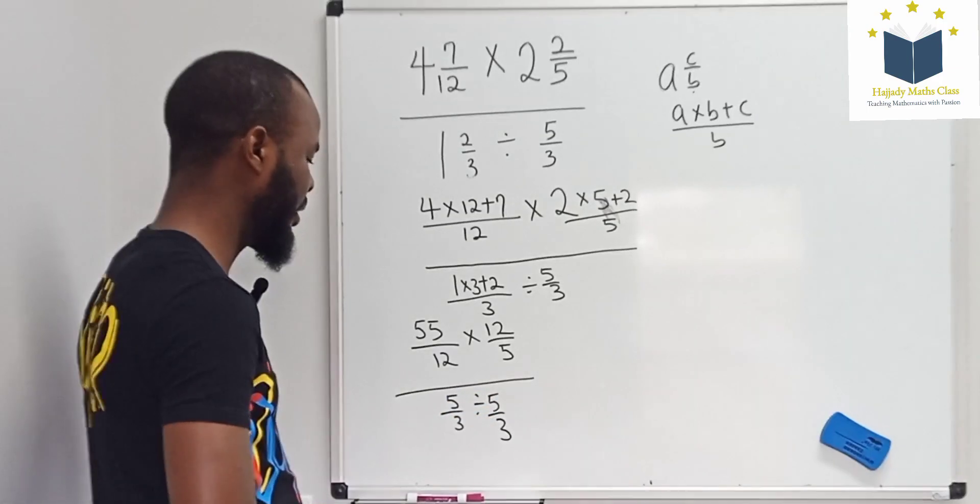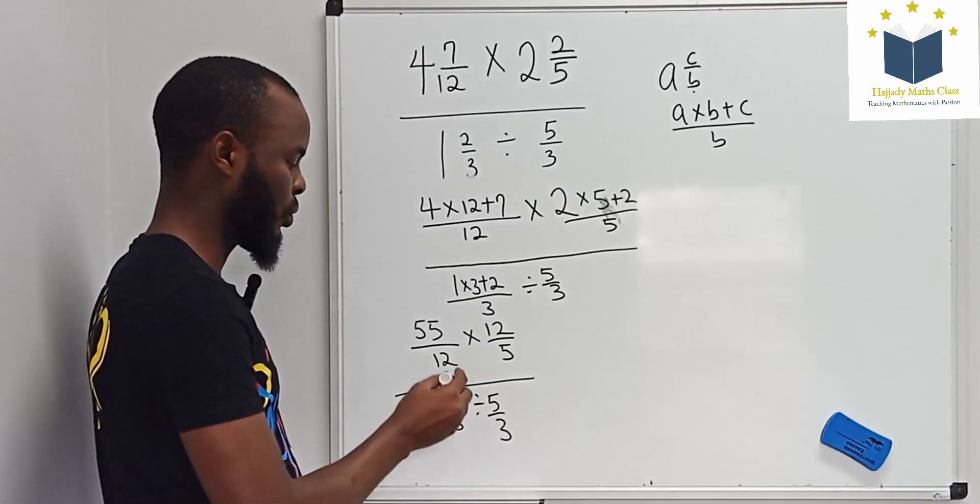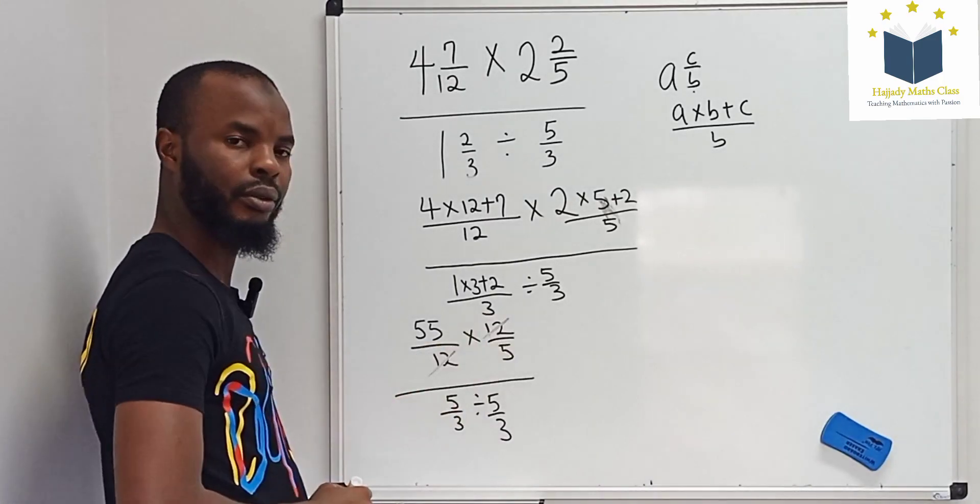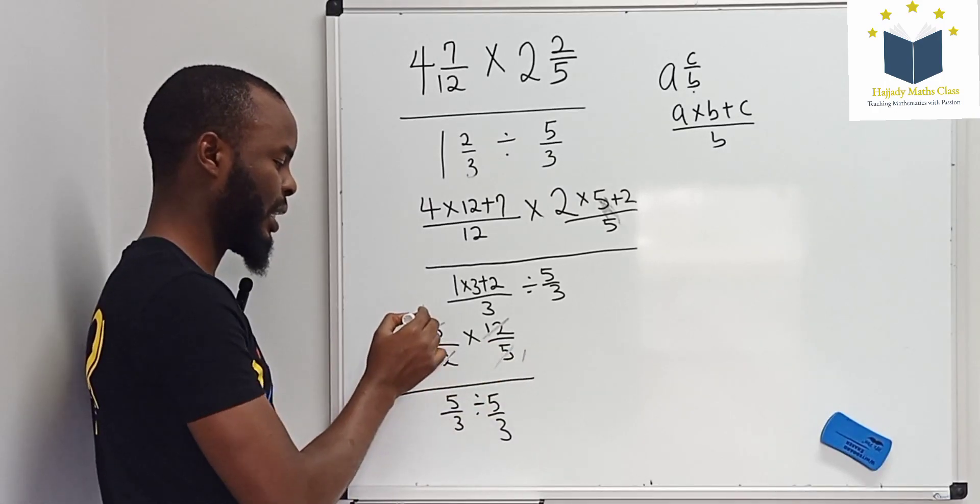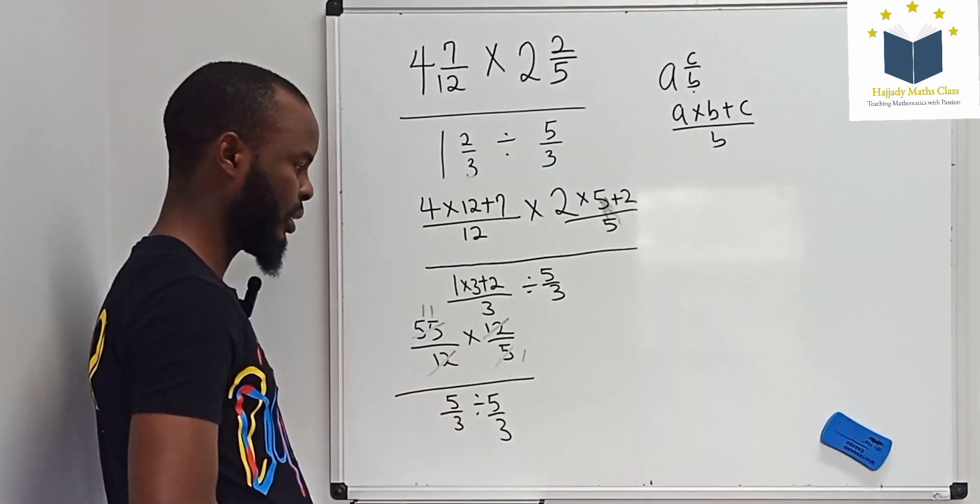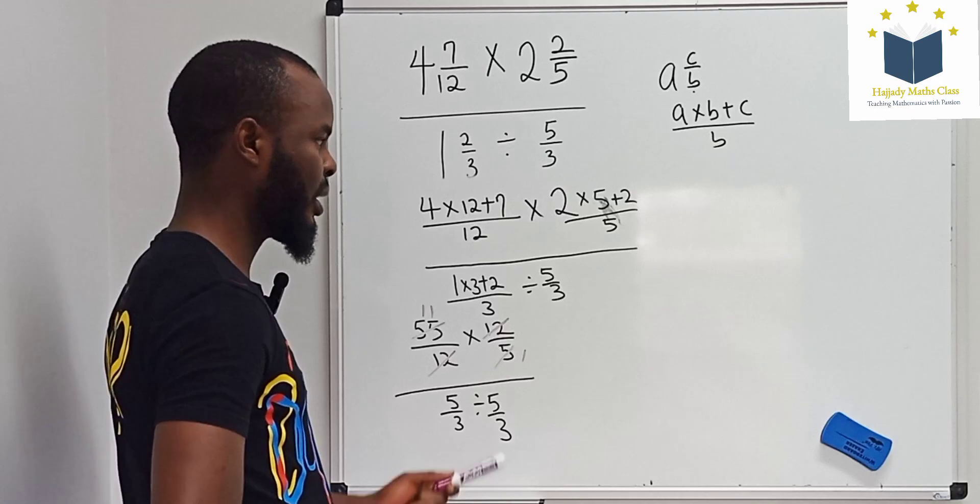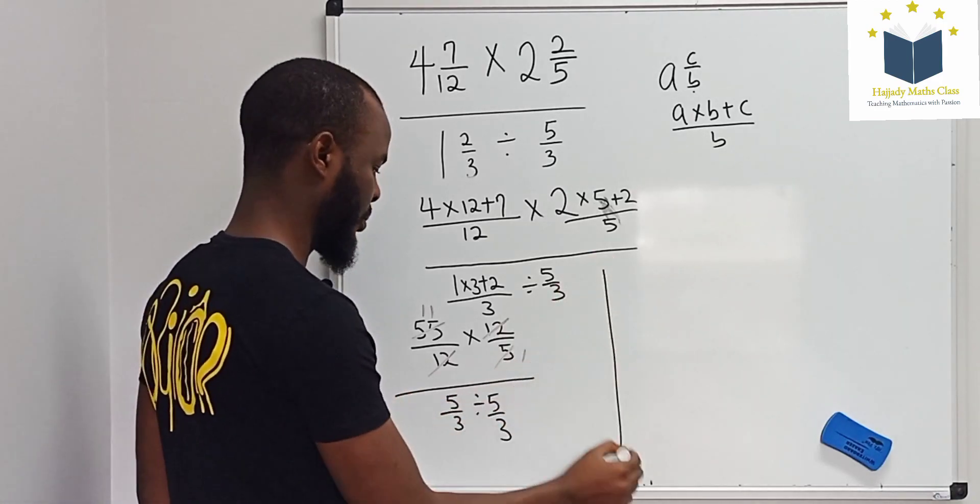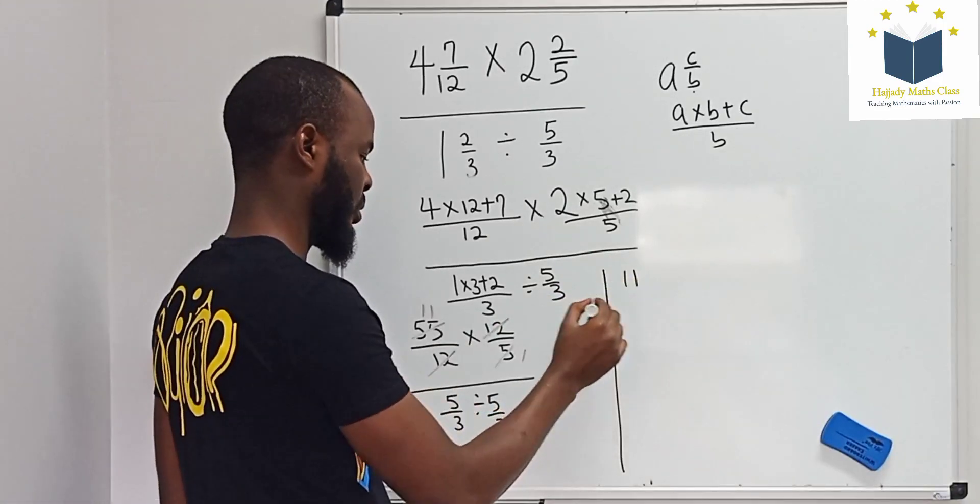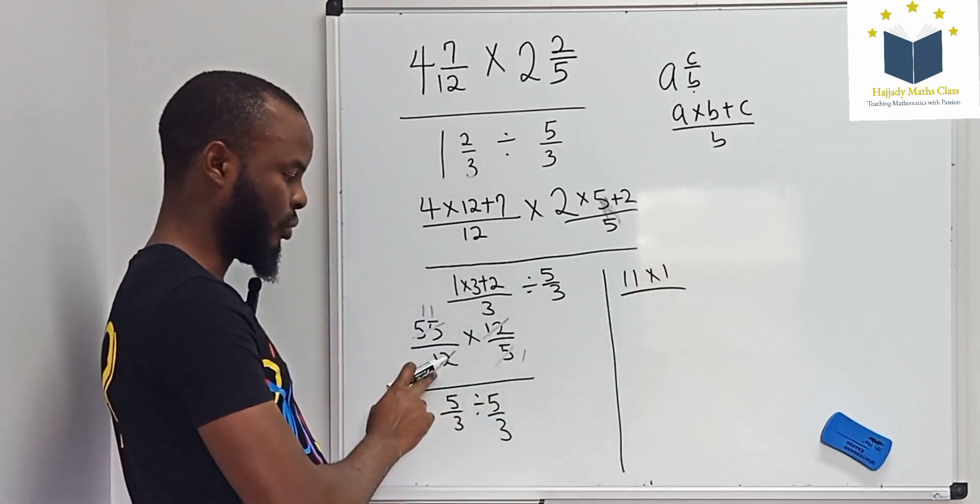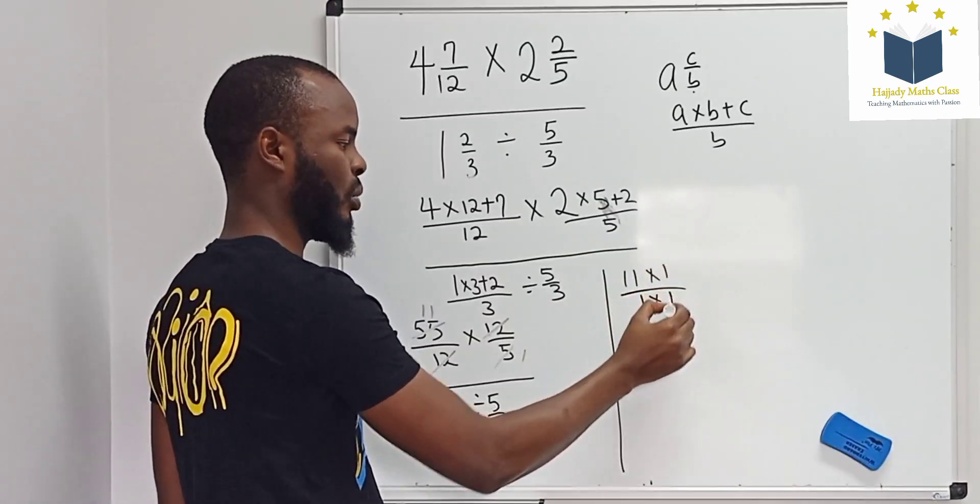Now looking at this, 12 and 12 cancel out. So my numerator gives 55, 5 here is 1, 5 here is 11. So my numerator gives 11 multiplied by 1 over 1 multiplied by 1.